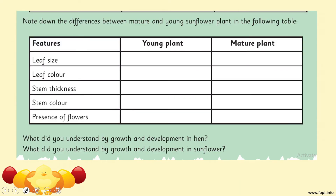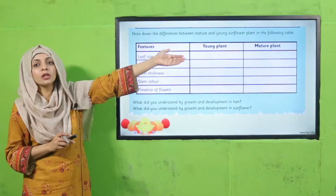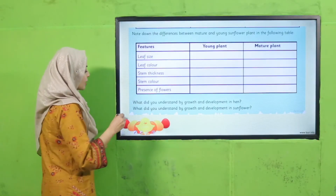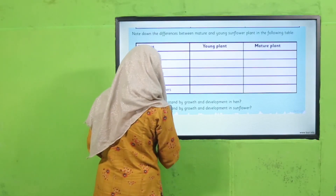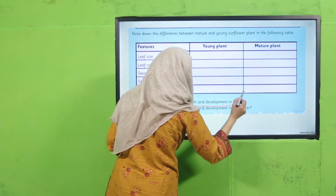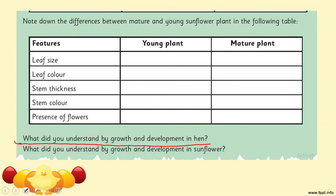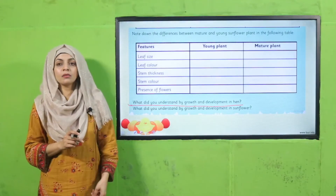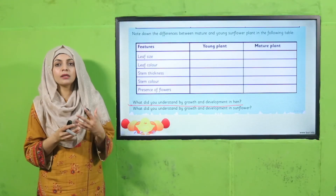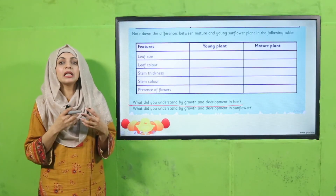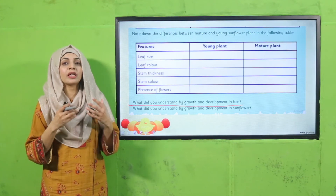In this table, write the differences between the young plant and the mature plant: leaf size, leaf color, stem thickness, stem color, and presence of flowers. The next question is: what did you understand by growth and development in the hen? A baby chick needs time — it grows in size, feathers, and all body parts become mature and developed over time.